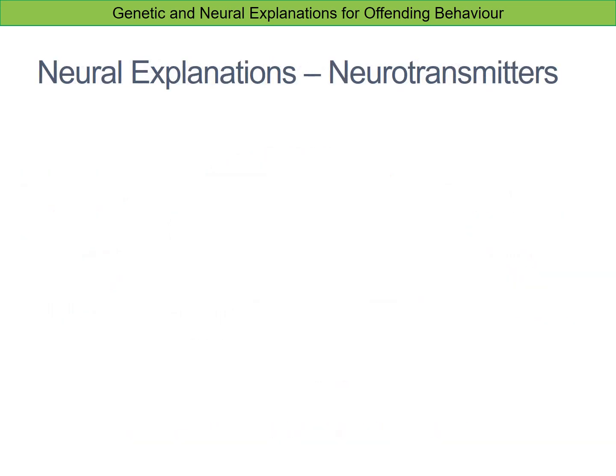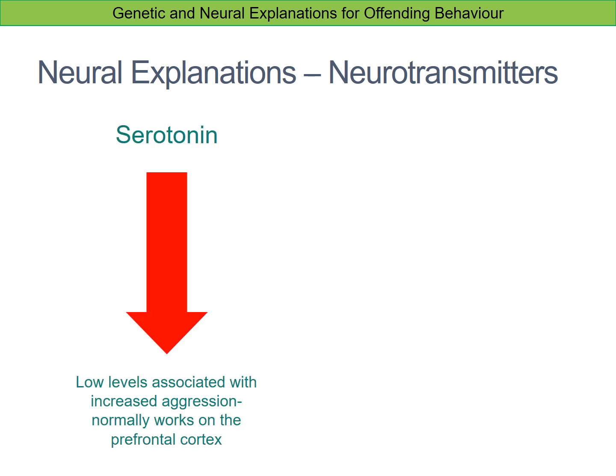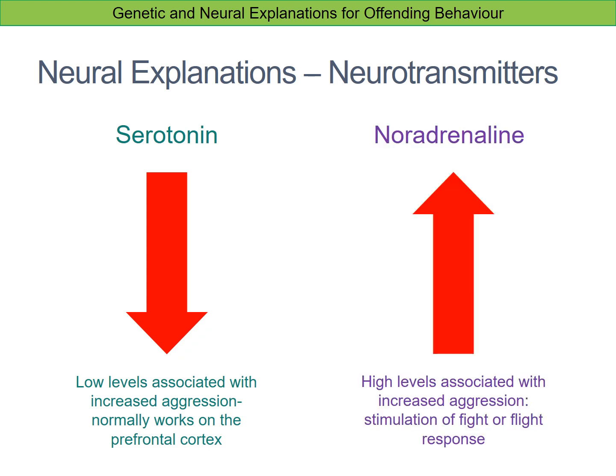Looking at more neural explanations, this time focusing on neurotransmitters: the first neurotransmitter implicated in criminal behavior is serotonin. Low levels of serotonin tend to be associated with increased aggression. Serotonin works on the prefrontal cortex, so there is almost certainly a link between this neurotransmitter explanation and the brain areas explanation regarding the functioning of the prefrontal cortex.